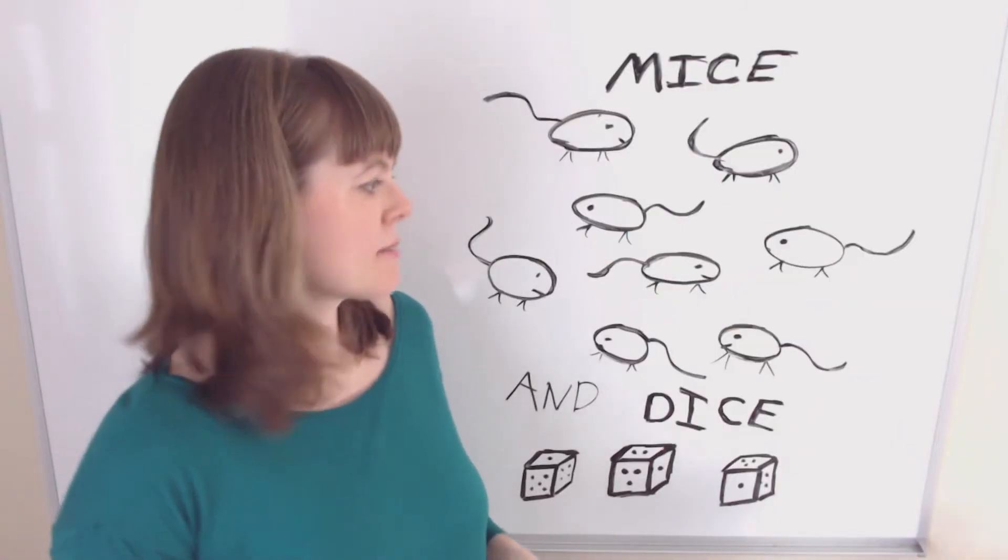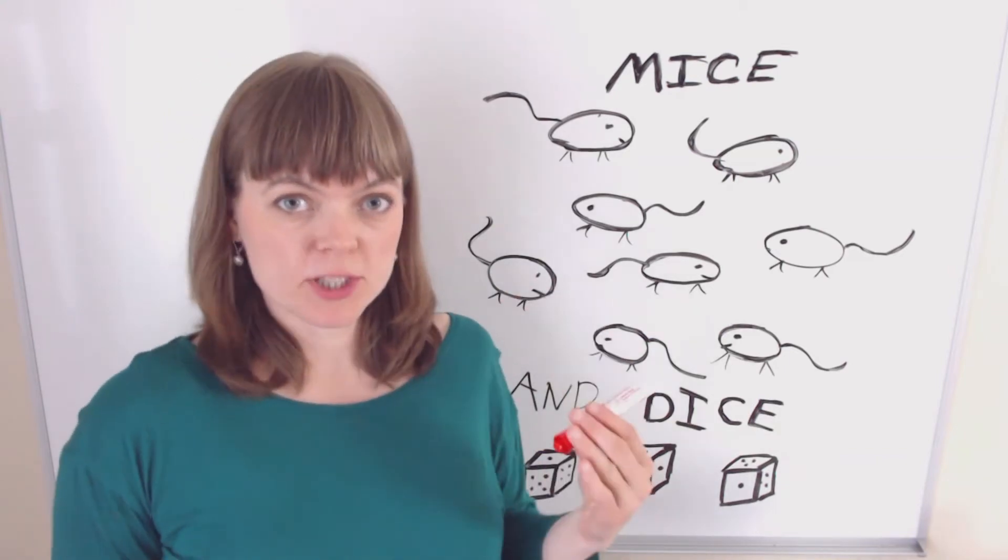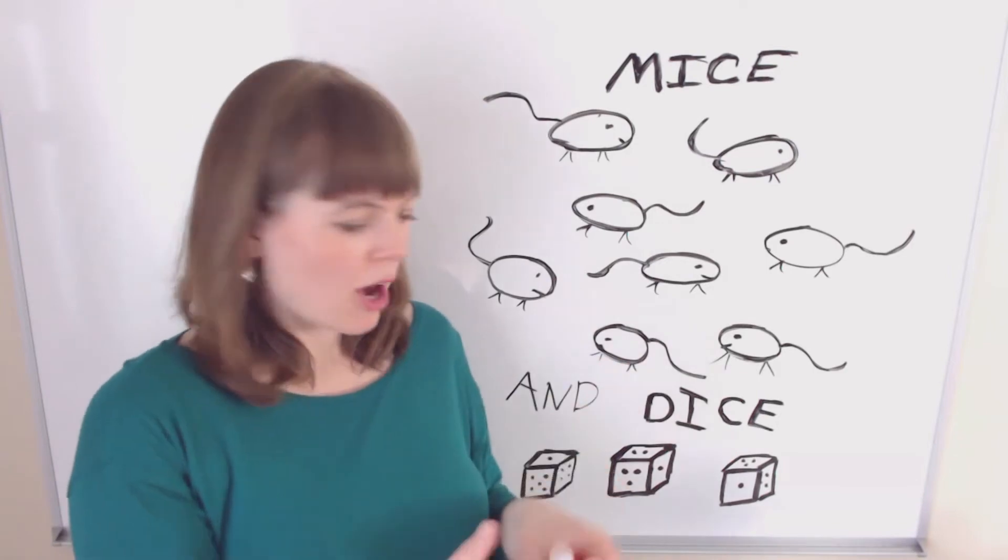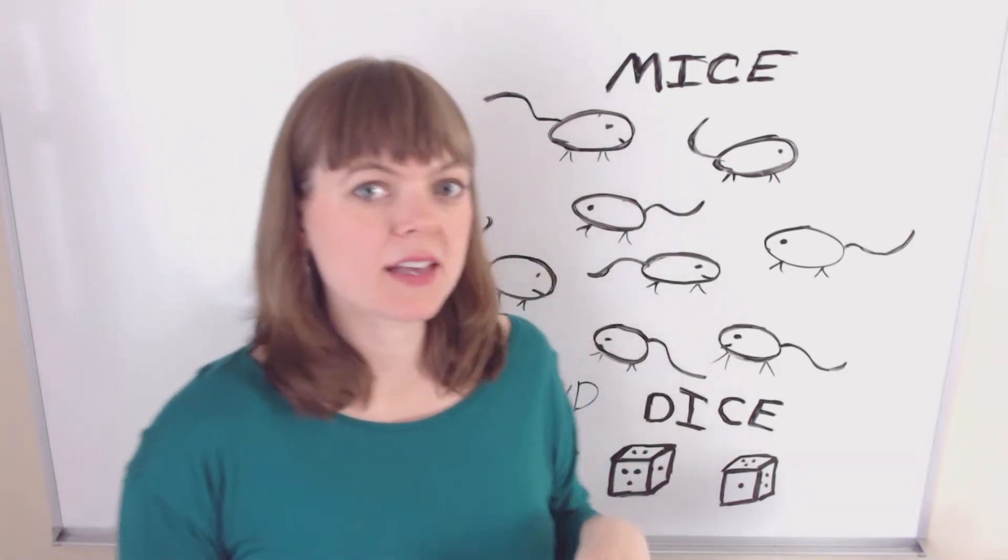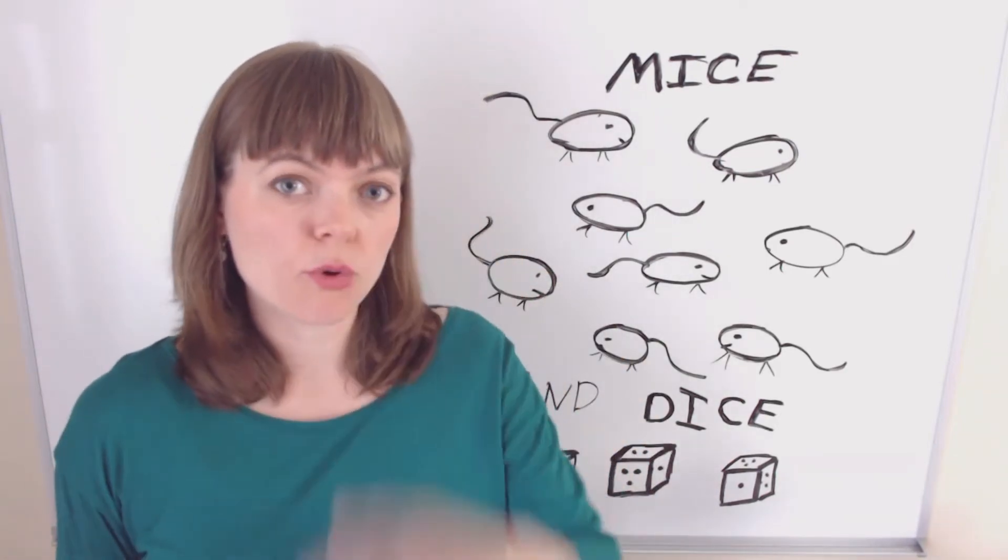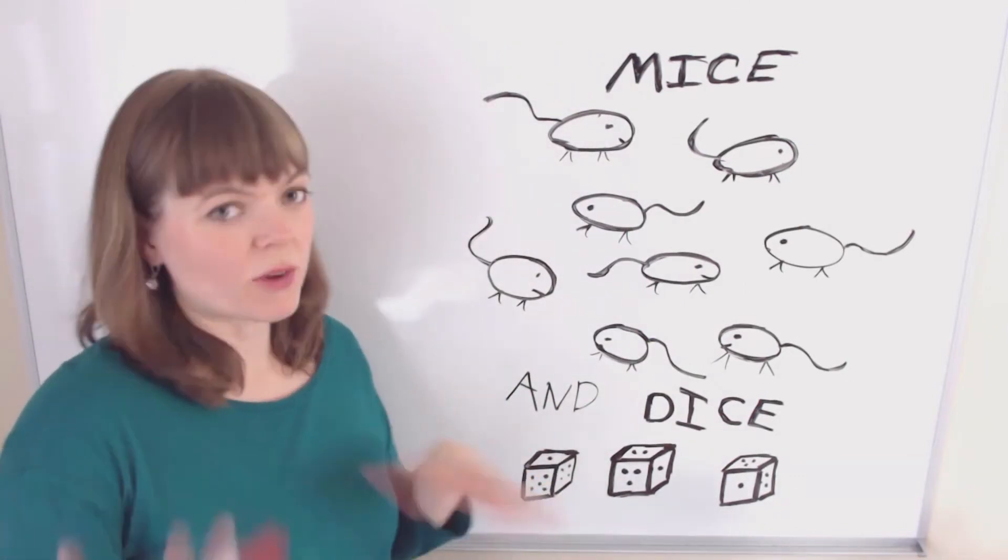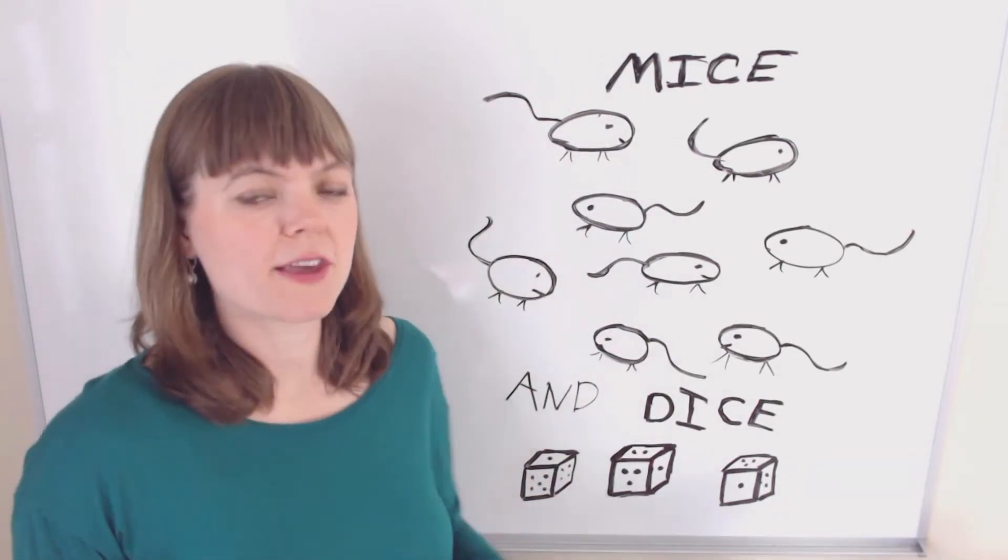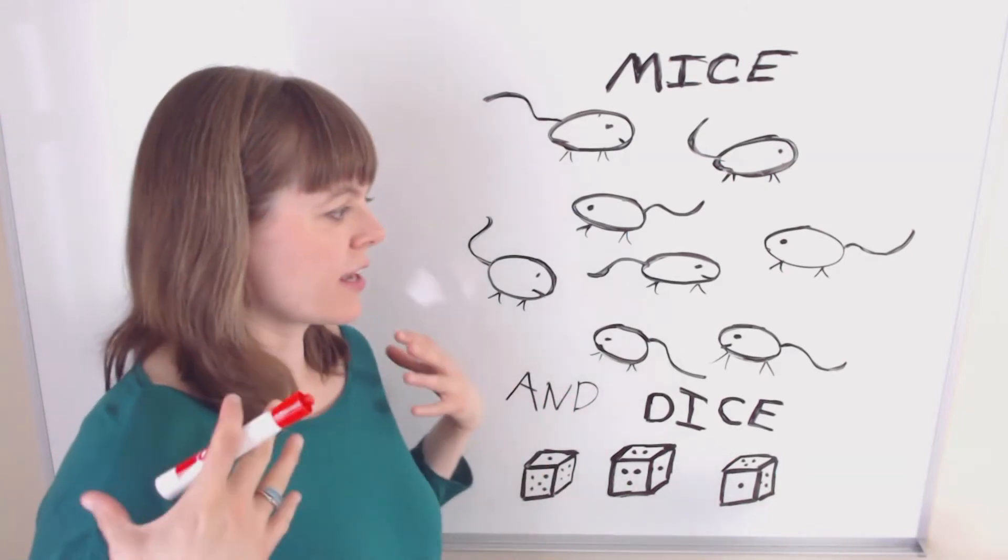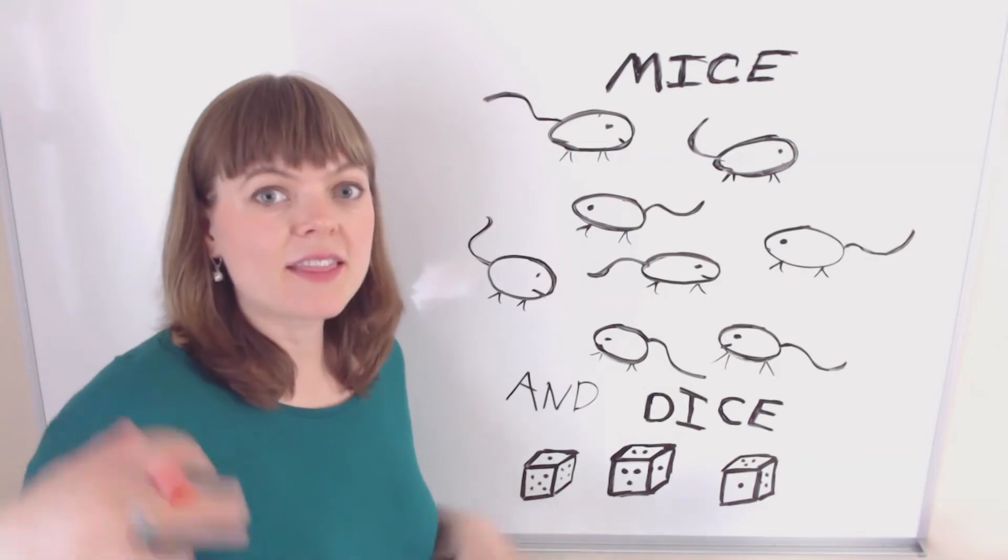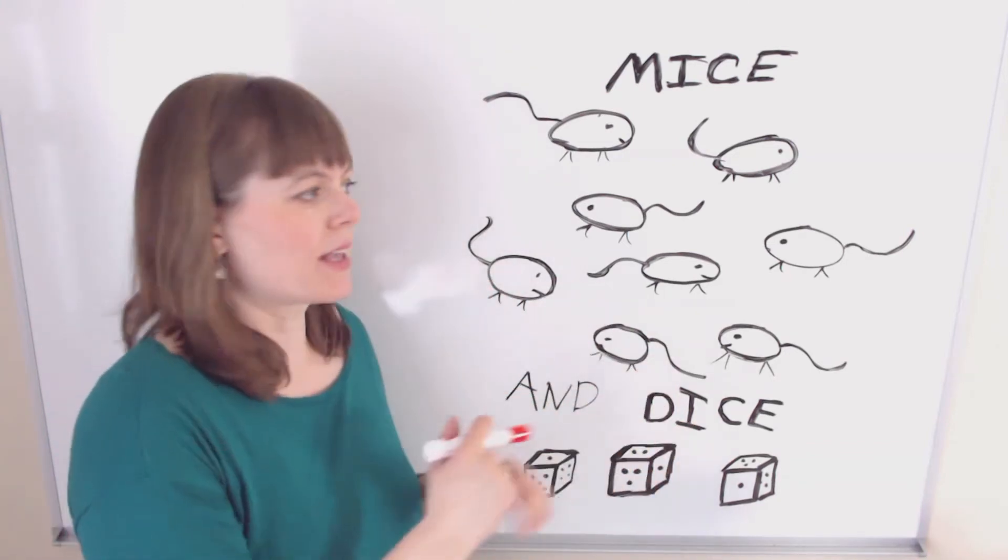In other fields like medicine and biology, they might accomplish this using mice and dice, where they get a bunch of lab rats and they randomly assign lab rats to a control or experimental group using the dice. If they roll one, two, or three, they're in the control group. If they roll four, five, or six, they're in the experimental group. Or they might flip a coin randomly, and in that way they randomly assign these mice.